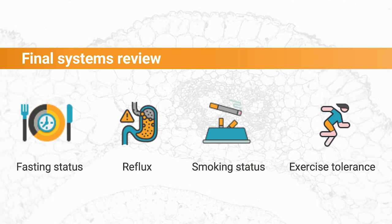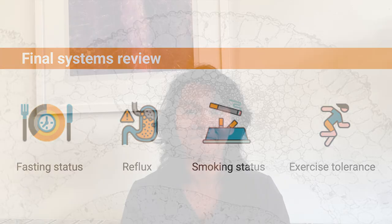Finally, I mop up everything else in a systems review — that's where having a pro forma is useful. That's where questions like fasting status, any reflux, exercise tolerance, and activity level come in. Most of the time, though, I've already covered those in the first three categories.